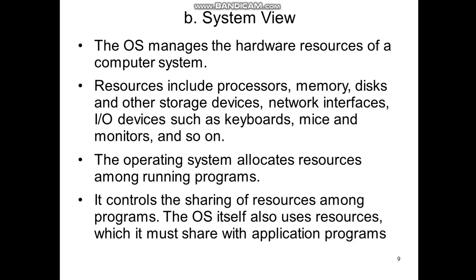Now the system view. The operating system has to manage the hardware resources of the computer system. Resources include processor, memory, disk and other storage devices, network interfaces, I/O devices, etc. The operating system is responsible for allocating these resources among the running programs. Not only this, it also controls the sharing of resources among programs. So the operating system basically acts as a resource manager.